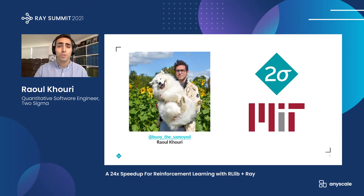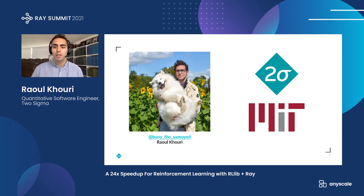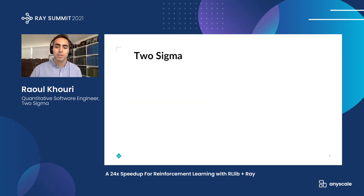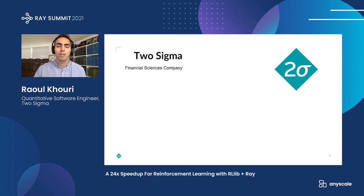For those of you who don't know what Two Sigma is, we're a financial sciences company — we coined that term actually last year. Prior to that we were just an investment manager, but we've started to do a lot more than just that. We've done a lot of other financial data-driven endeavors, including insurance, real estate, private equity, and many more.